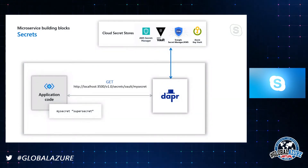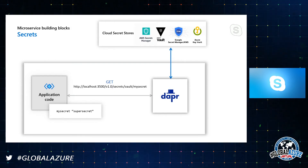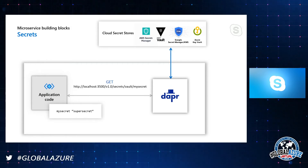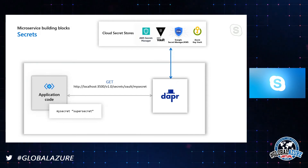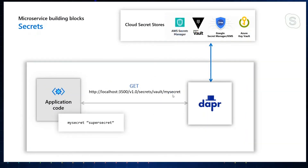One of the most exciting building blocks contributed by the community is secrets management. If you've ever tried to pull out a secret to attach to a back-end SQL database, you know you should store it in a secure vault rather than in your code or CI/CD system. DAPR does all the hard work of authenticating on behalf of your code to external secret stores, pulling down secrets and returning them via a local API call. We built in Azure Key Vault at launch, and since then the community added HashiCorp Vault, AWS Secrets, Google Secrets Manager, and Kubernetes secret store support.